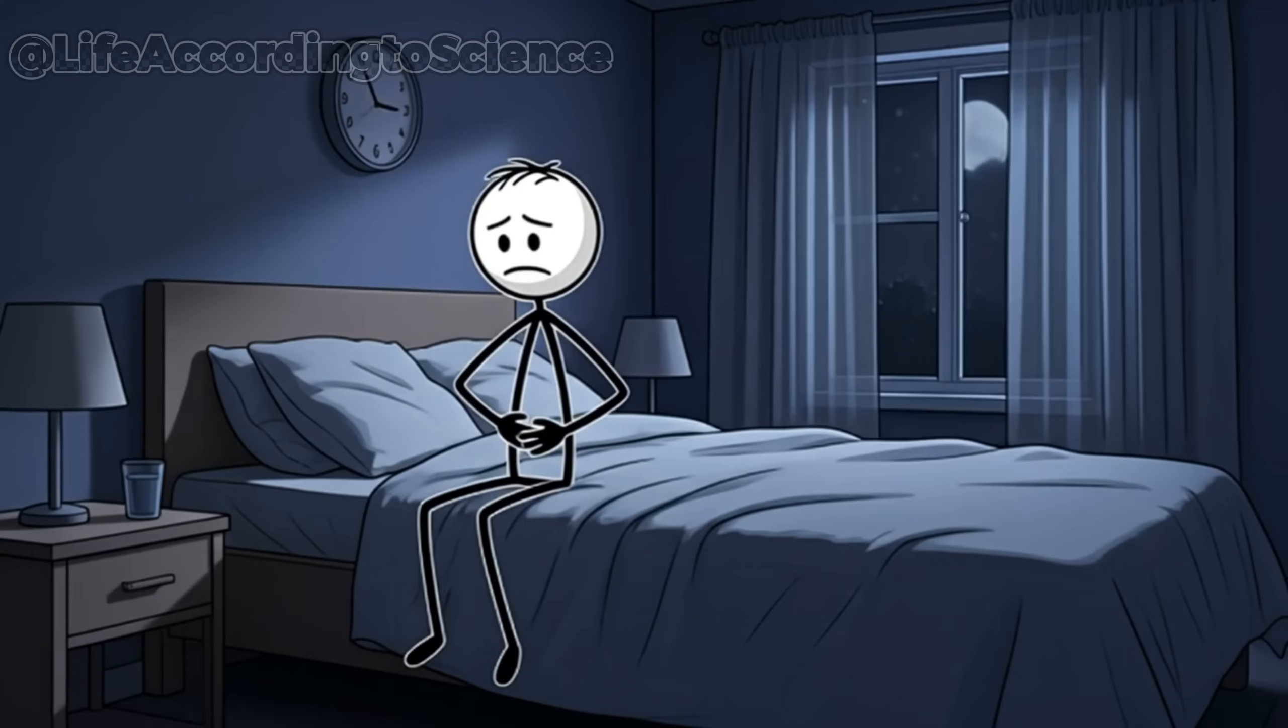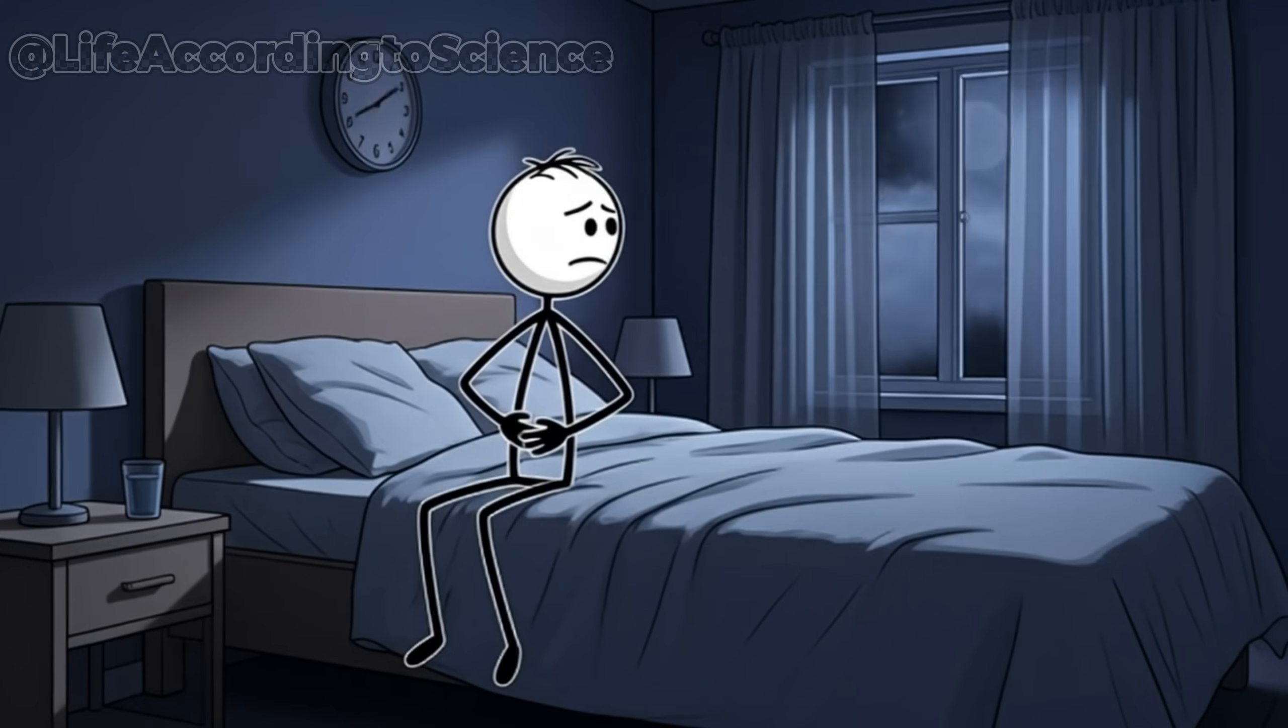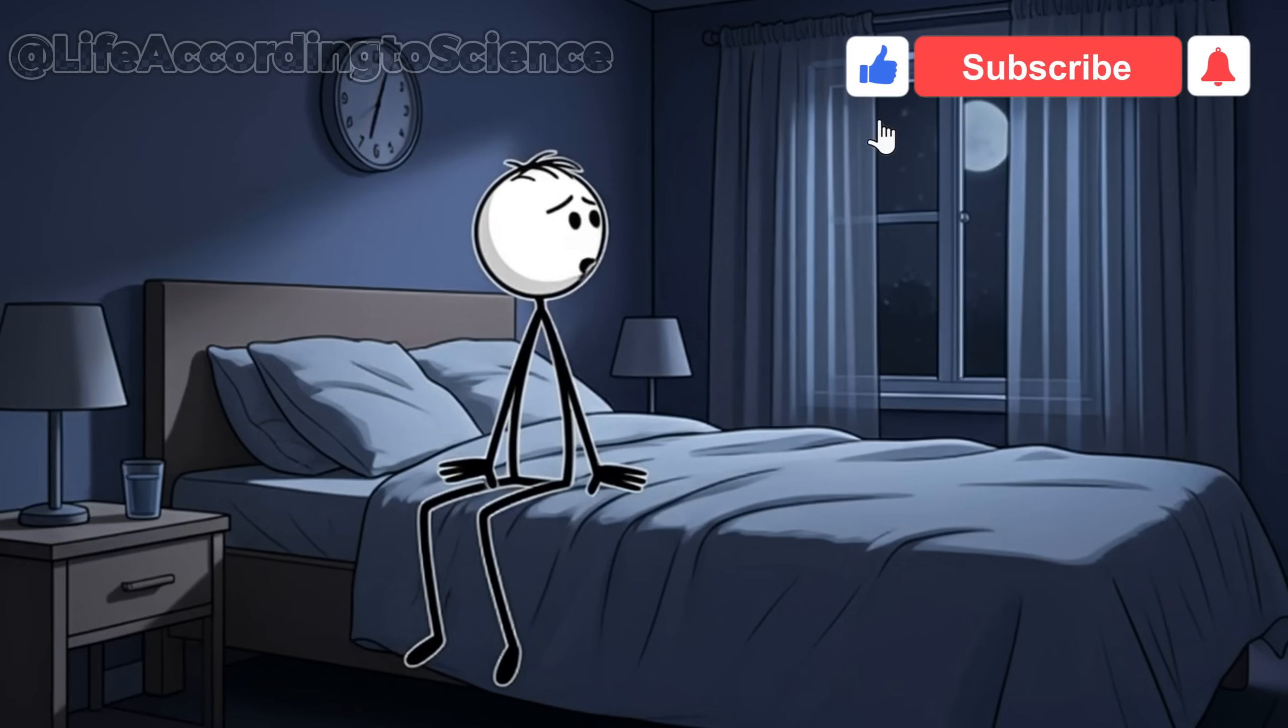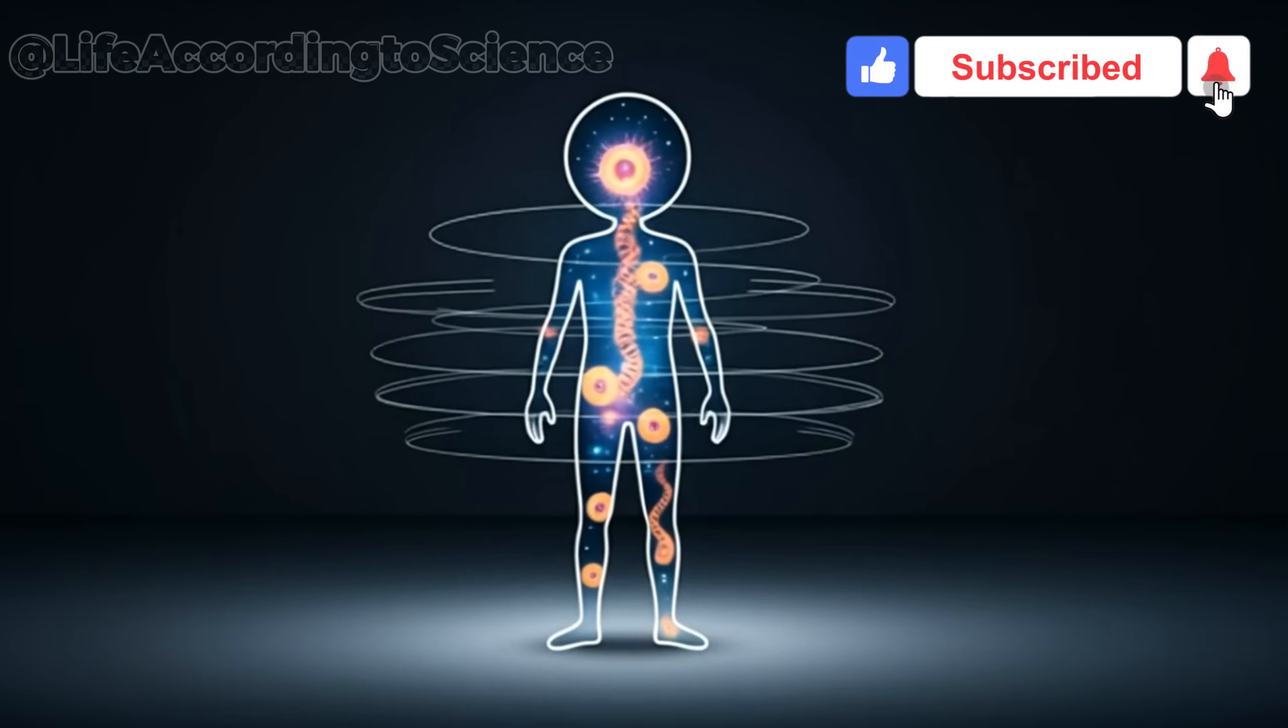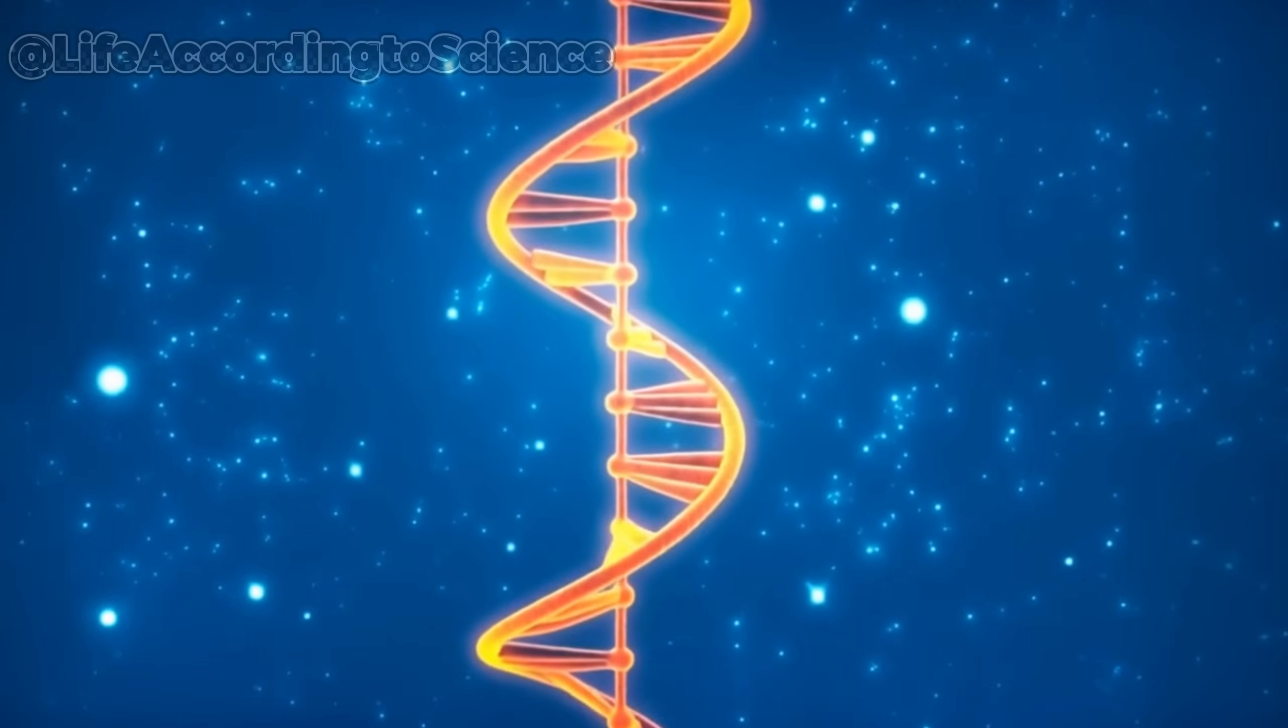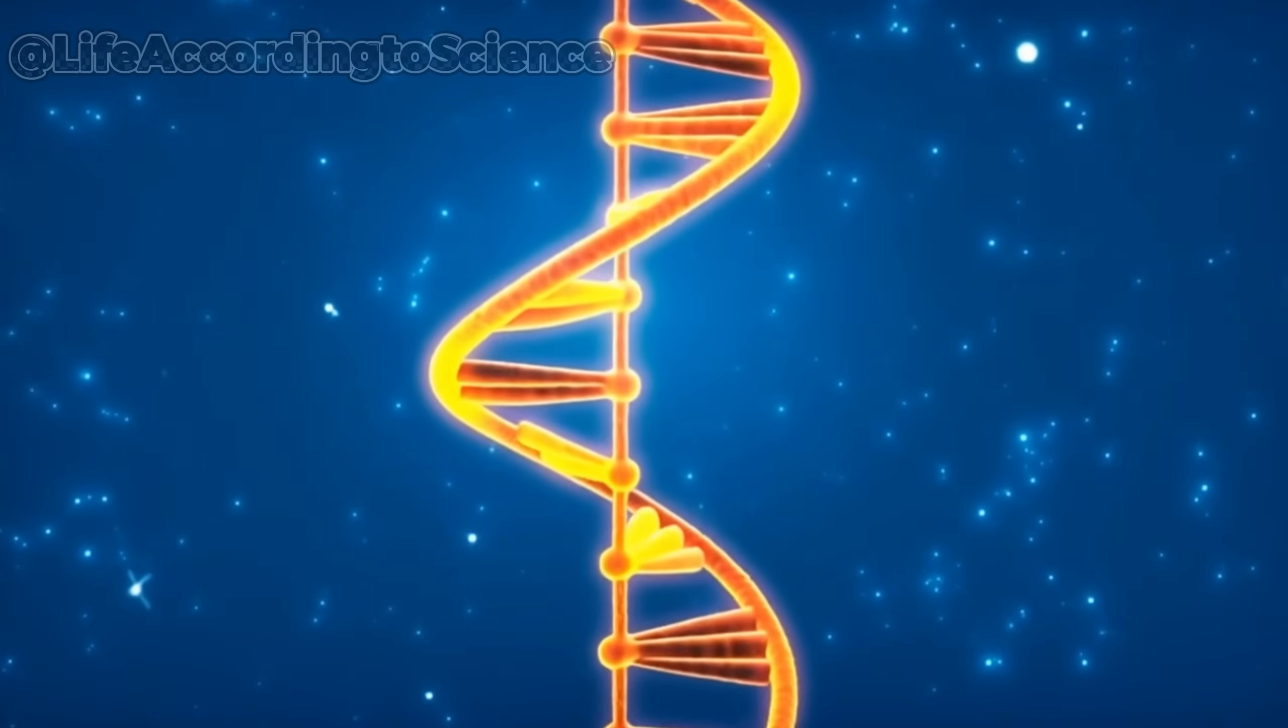The moment you decide to stop eating, your body enters a state of quiet confusion. It wonders, where's the next meal? But deep inside your cells, a silent program begins to run, a genetic code written by evolution itself.